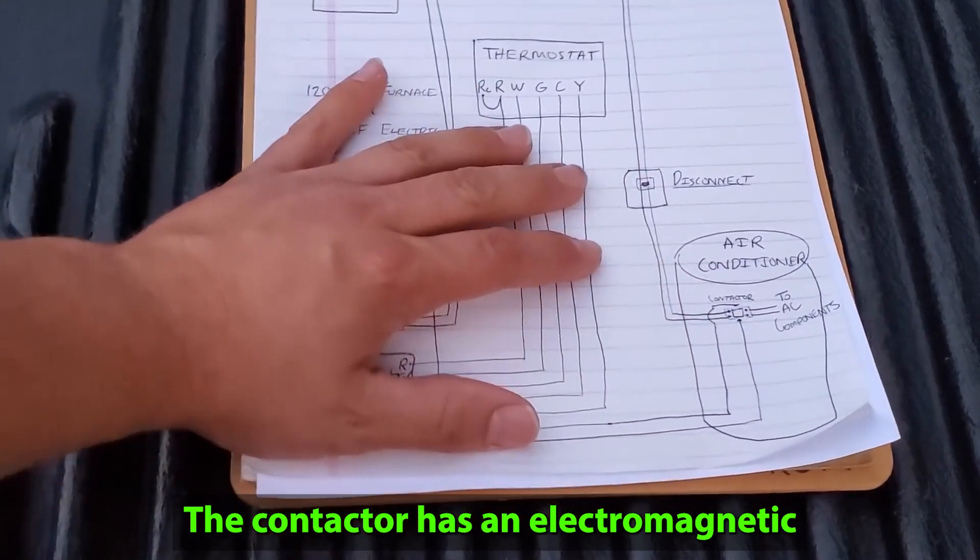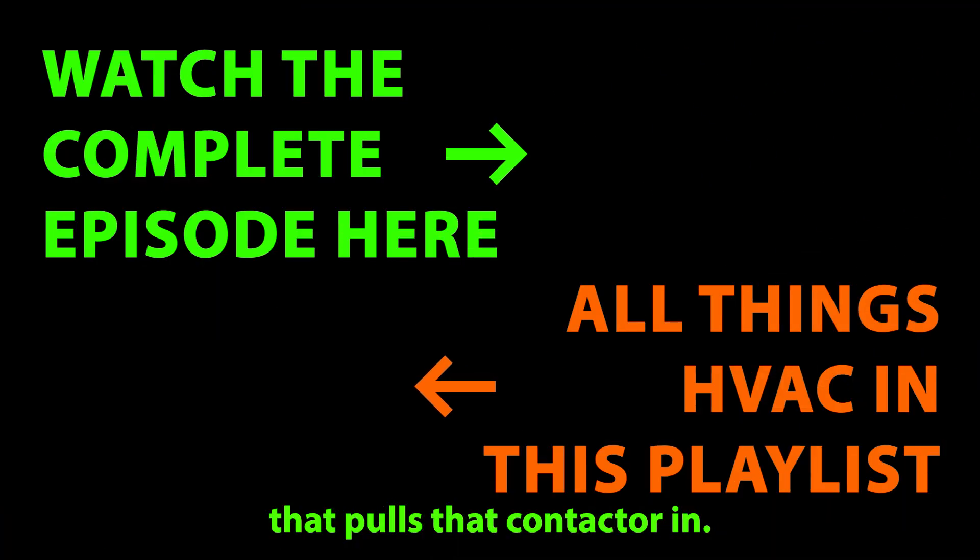The contactor has an electromagnetic 24 volt coil that pulls that contactor in. So on one side, we have that common wire connecting directly to it.